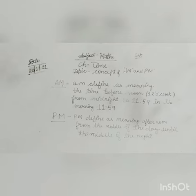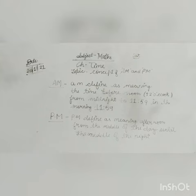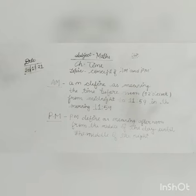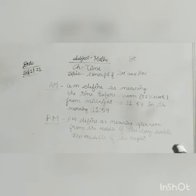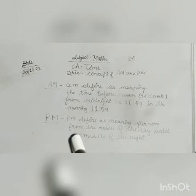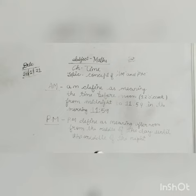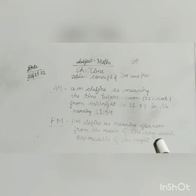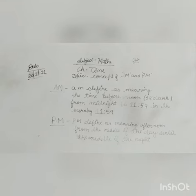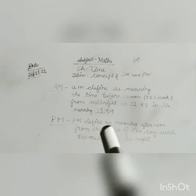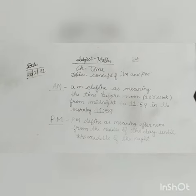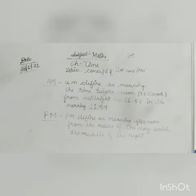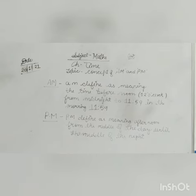Like agar 12:01 in the noon bhi ho raha hoga, toh you have to mention PM after that — like 12:01 PM. From the middle of the day until the middle of the night — din ke baara baje se raat ke baara baje tak — aapka PM concept hota hai, like up to 11:59 of midnight.